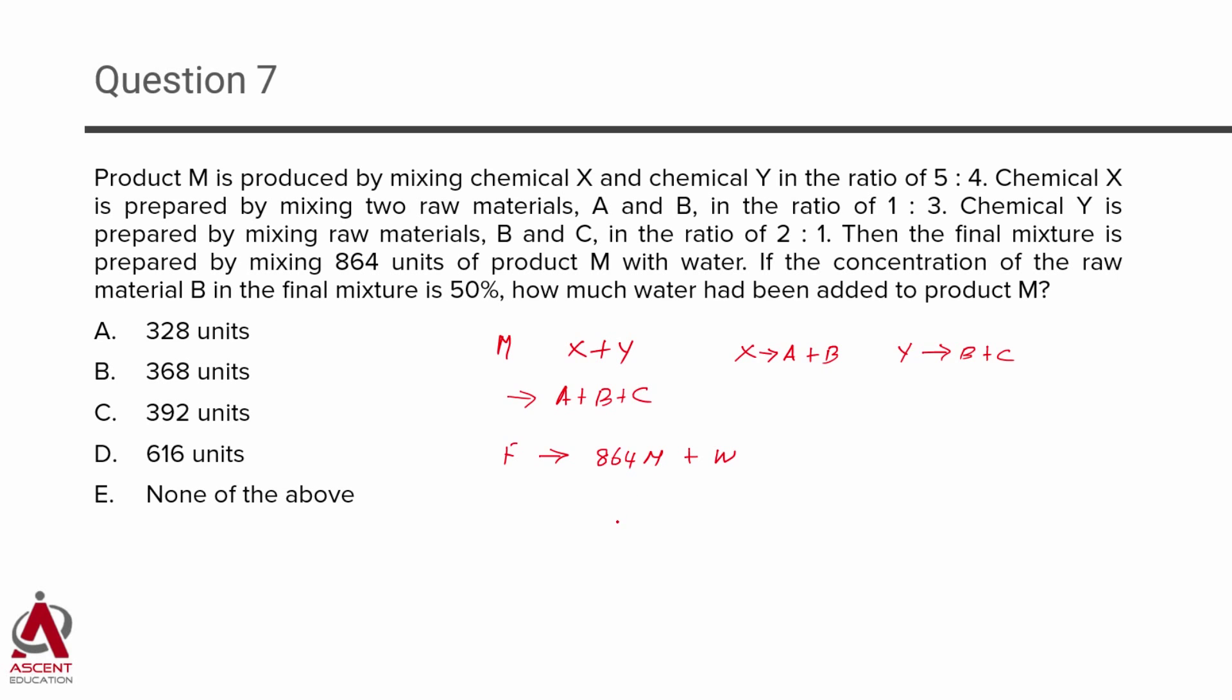The twist in the tail is the last sentence. It basically says that if the concentration of raw material B, you actually make F by mixing M with water. But M comprises B in it. They're saying the amount of B found in F is 50%. So, B is equal to 50% of F. So, this is what they're saying.